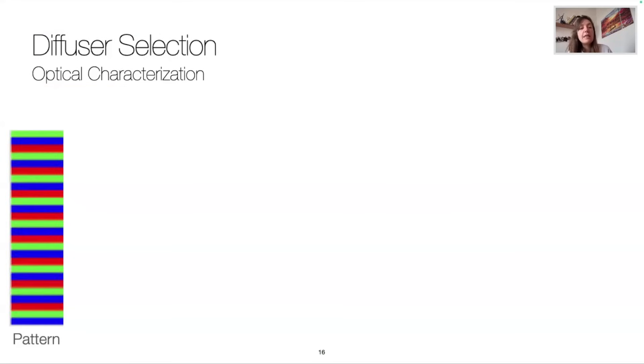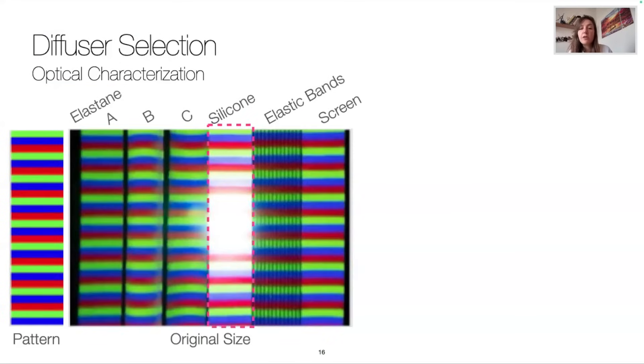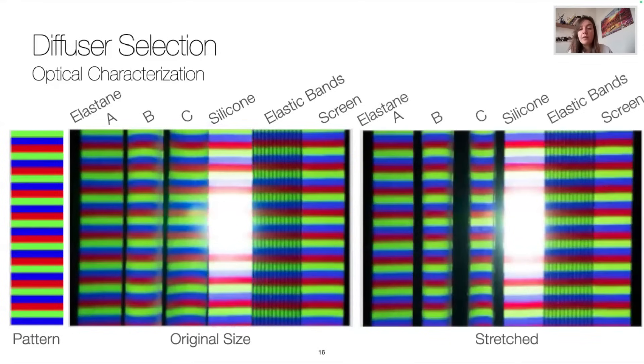So let's look at the RGB stripes pattern. At original size, we know that silicone reflects the light, resulting in quite bad optical characteristics for projection. When being stretched, we note that the two elastin behave as per our previous video and start twirling, hence making the stripes actually curved. Elastin A, elastic bands and screen show good optical properties for projection.